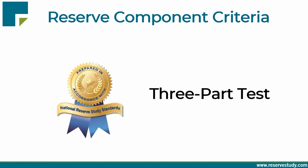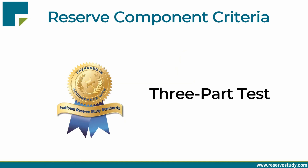The 2023 revised three-part test defines which projects are appropriate for funding through reserves. To be funded through reserves, a project needs to pass all three elements: first, it must be the association's common area maintenance obligation; second, it needs to be reasonably anticipated — meaning you can see it coming and budget for it; and third, it must be a cost that is significant in size to the association, meaning not easily absorbed in the ongoing operating budget. That threshold is often in the range of half a percent to one percent of an association's annual budget, or the board manager's signature authority.